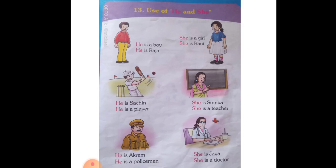Use of he and she. H-E, he. S-H-E, she. He is a boy. He is Raja. She is a girl. She is Rani. He is Sachin. He is a player. She is Sonika. She is a teacher. He is Akram. He is a policeman. She is Jaya.